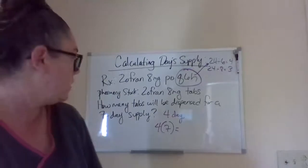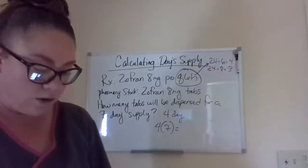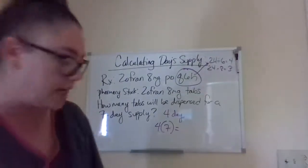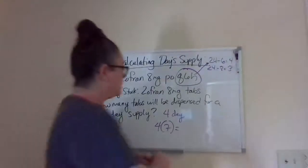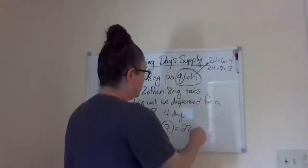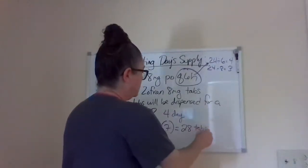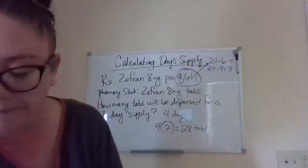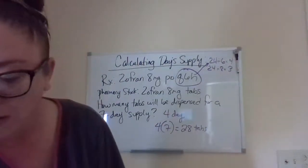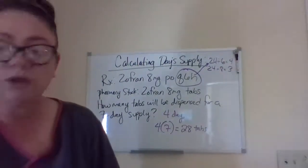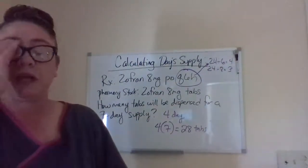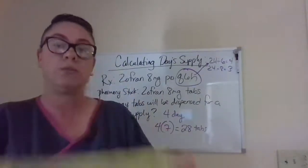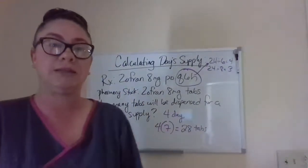So we're going to take four times seven and we get 28 tablets to dispense. You really have to know your SIG codes — use your SIG code chart when you're completing these assignments.